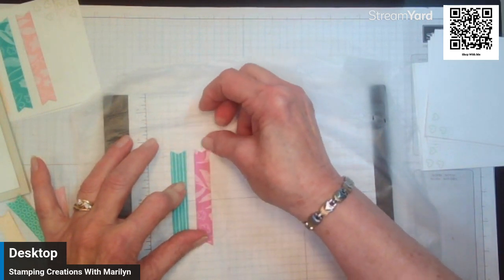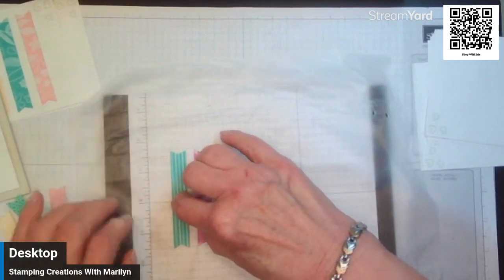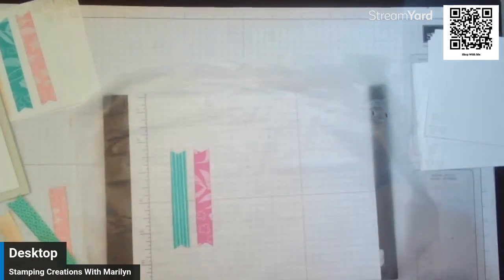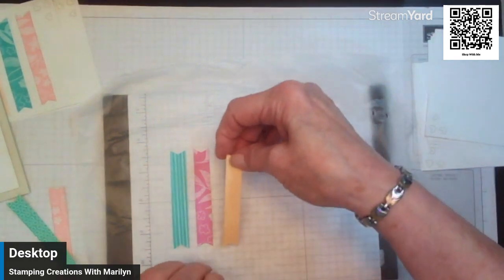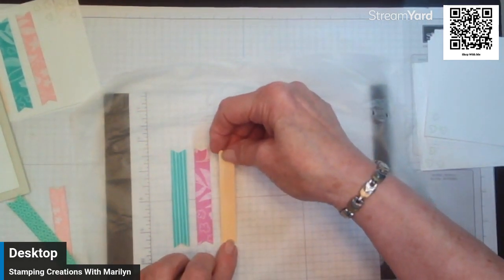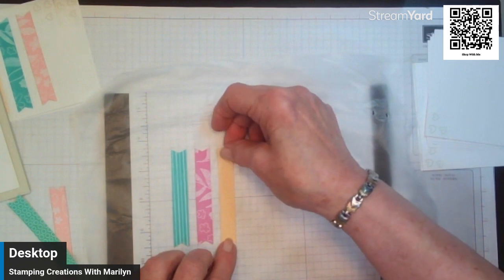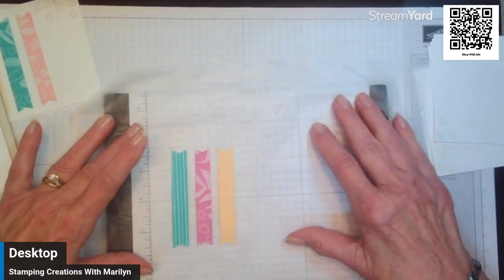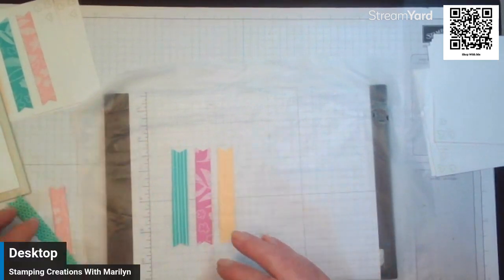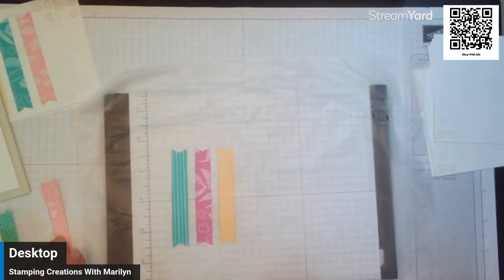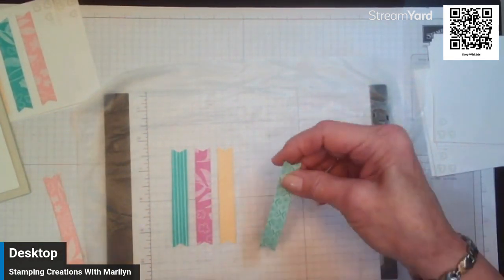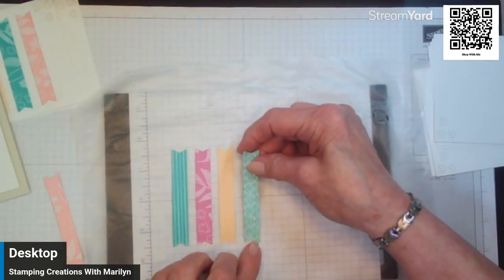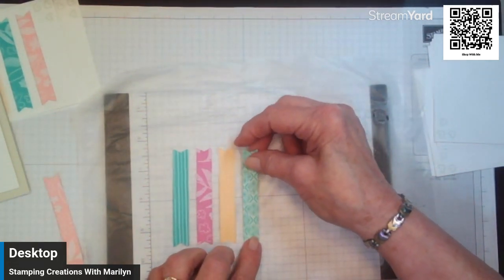So your grid paper has quarter inch lines, you can line them up along the bottom, just leaving one quarter inch space in between. And if your paper moves you can line it up again.